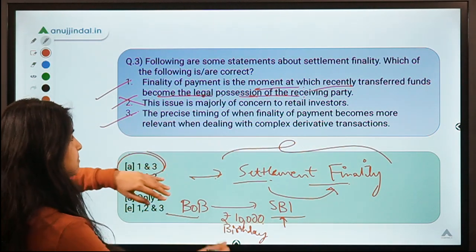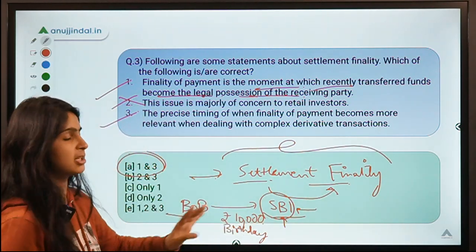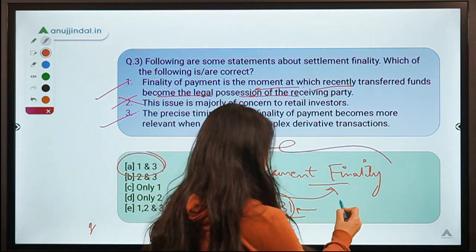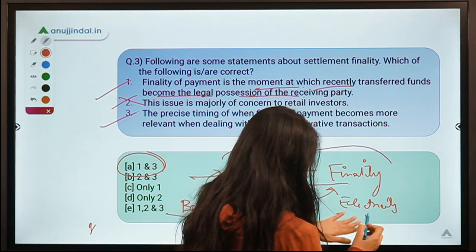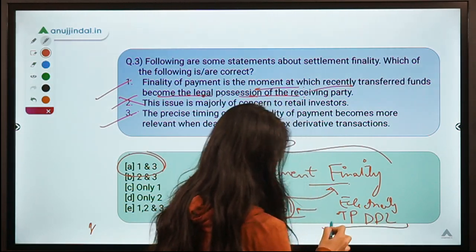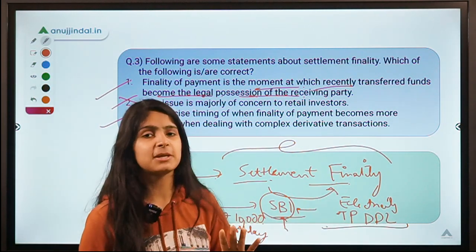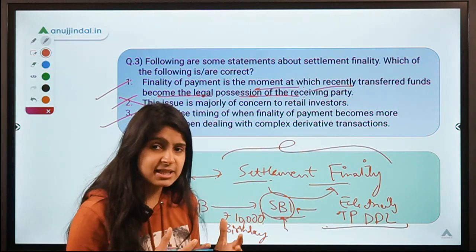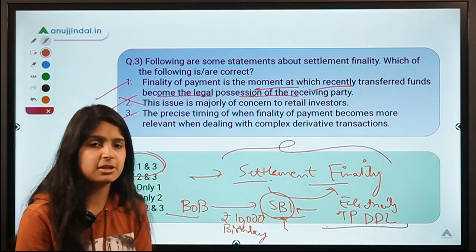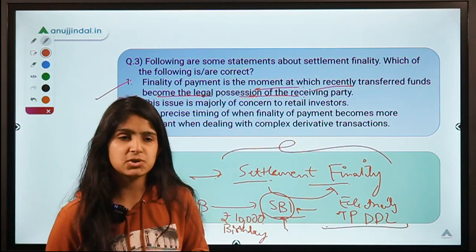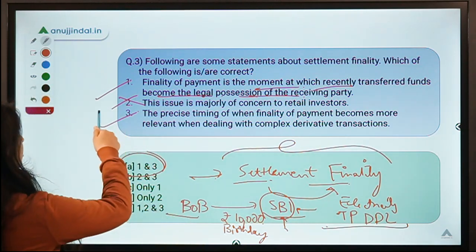The moment at which recently transferred funds become the legal possession of the receiving party — whether that is a friend at SBI or TPDDL in the case of an electricity bill payment. If you are making a bill payment on the last day and the payment gets stuck, your electricity may be cut. That is why consumers should pay bills beforehand and keep a time margin so they can sort it out if the payment gets stuck.